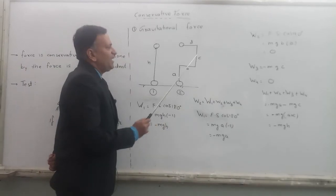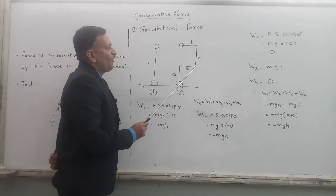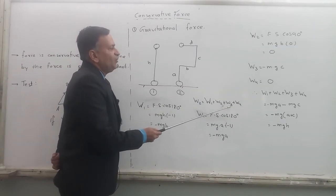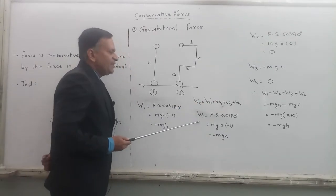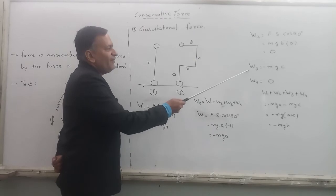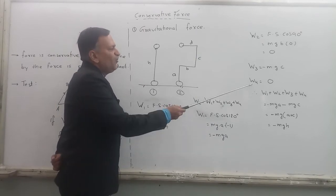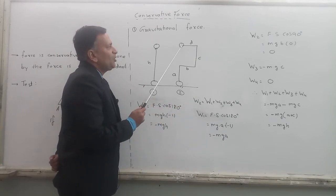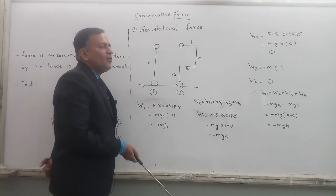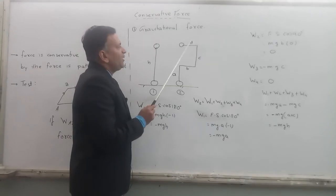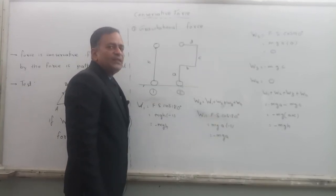You can check by yourself work done from this point to this point, that is W3. How much it is? It is minus MGC. Just like W1, calculate. W4 work done from this point to this point. Again, what is the angle between them, force and displacement?